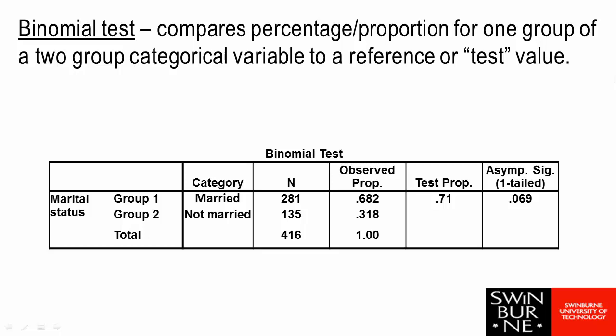The table shown is the output that we get from SPSS for the binomial test. The top row indicates the category that we are interested in. So in this particular test we've got percentage of people married, and we can see that the two categories are married or not married.